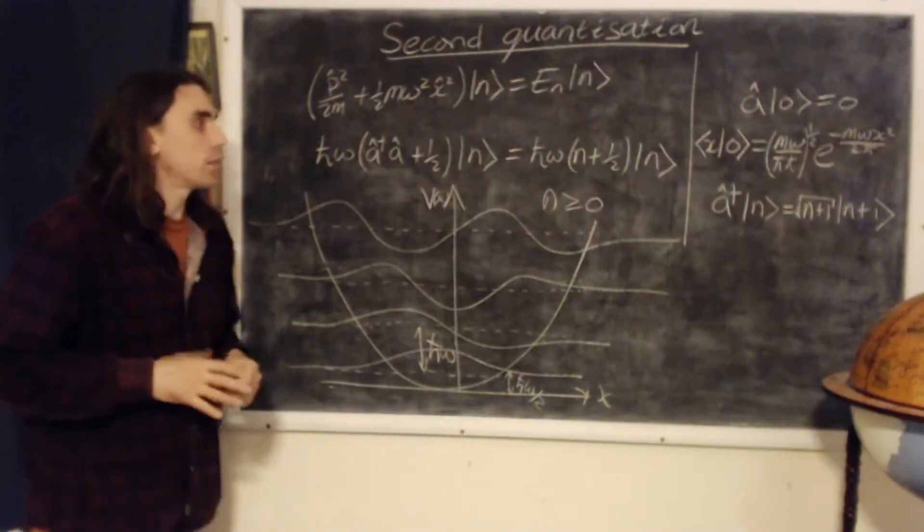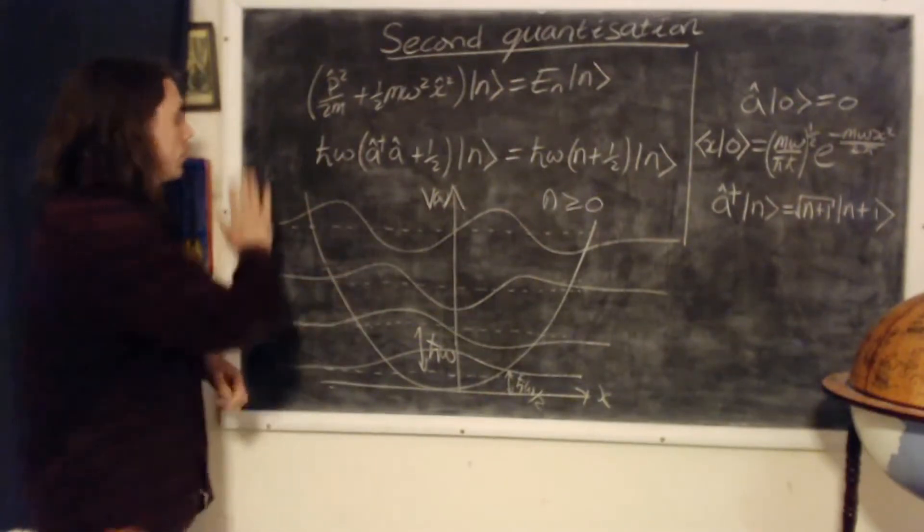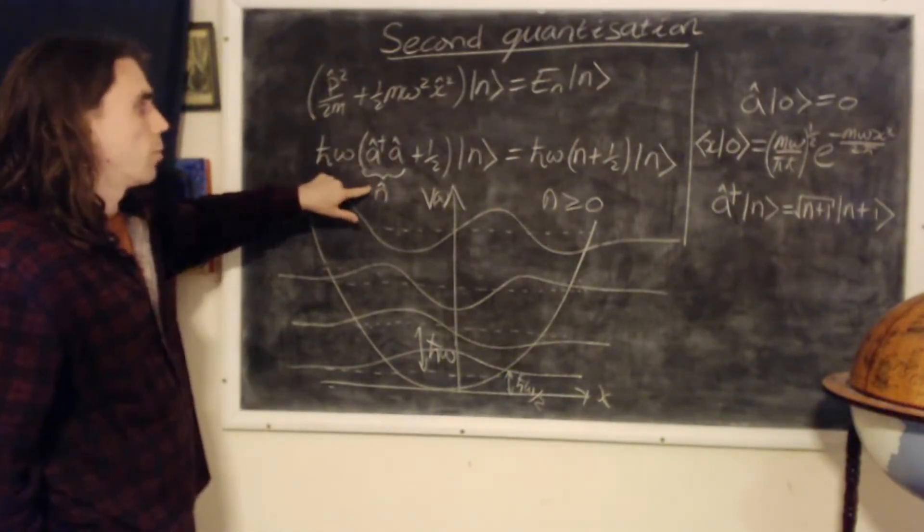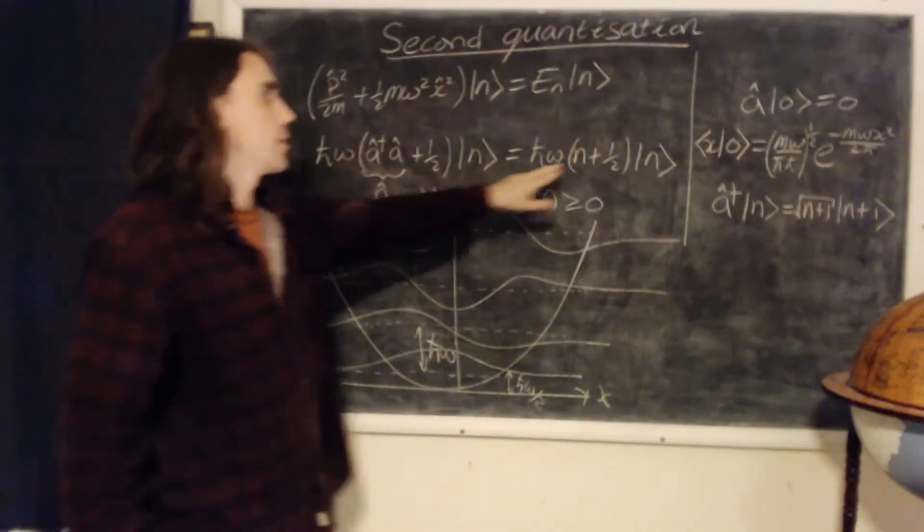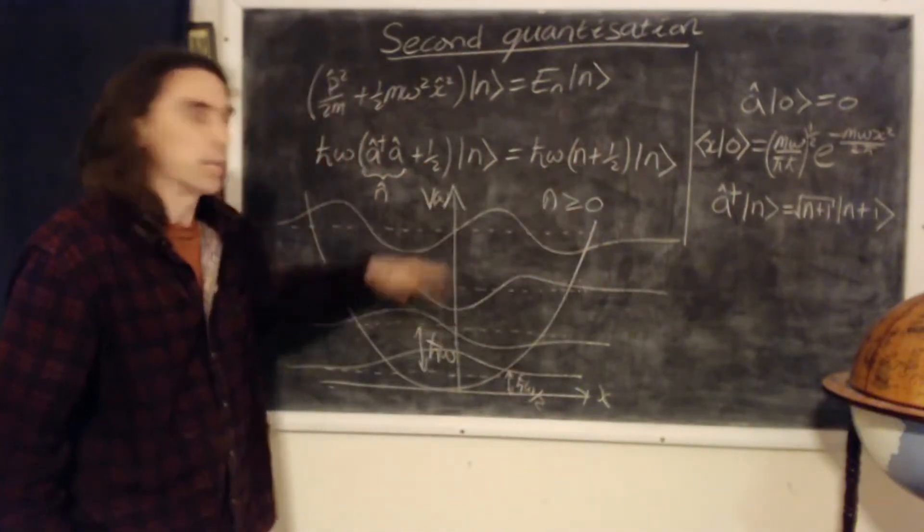Okay, but let's take a look at what we're actually doing here a bit more philosophically. So this operator a dagger a, we've said is called the number operator, because it just returns the number of the state here, which is state 0, 1, 2, 3, and so on.